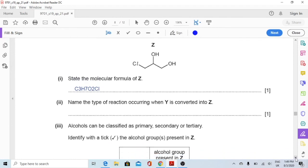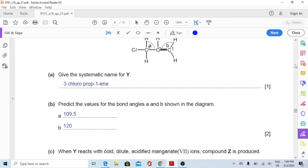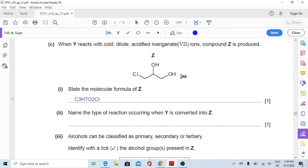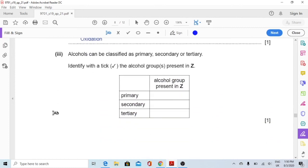Part 2, name the type of reaction occurring when Y is converted into Z. Y was reacted with cold potassium manganate 7. This double bond opened up and formed two hydroxides that were attached. So there is a gain of oxygen. So I'll name this reaction oxidation because oxidation is loss of electrons or hydrogen but gain of oxygen.